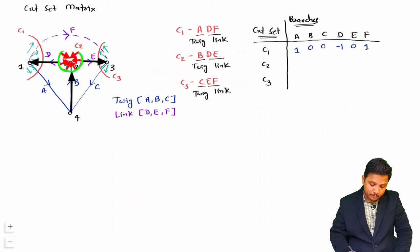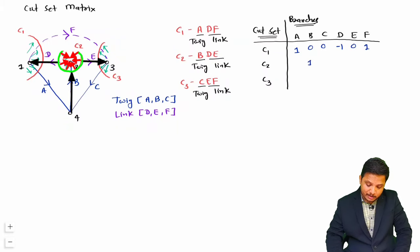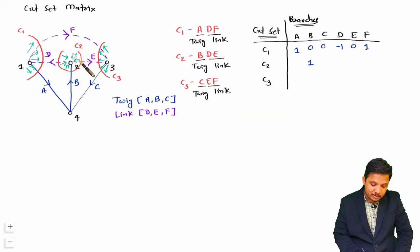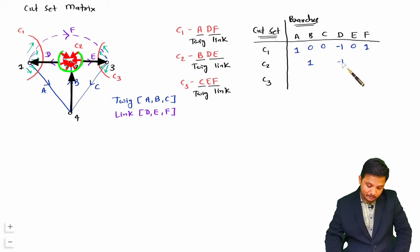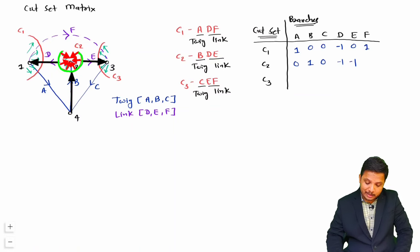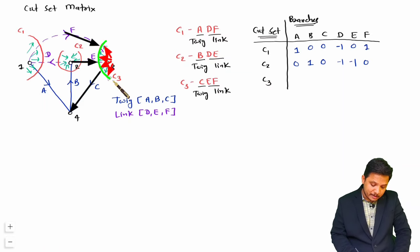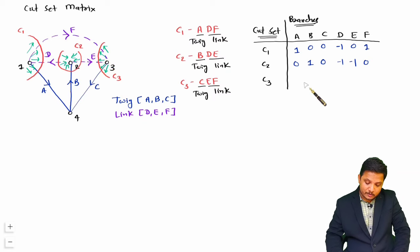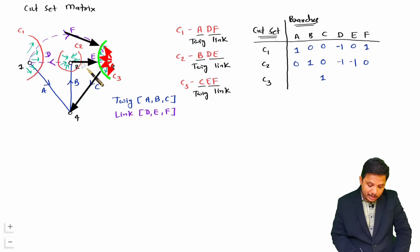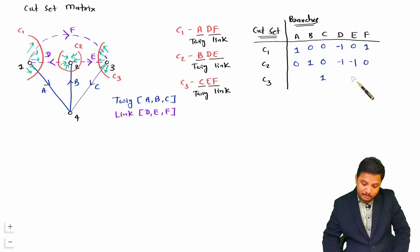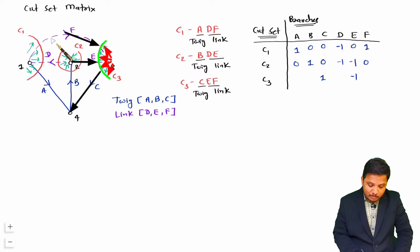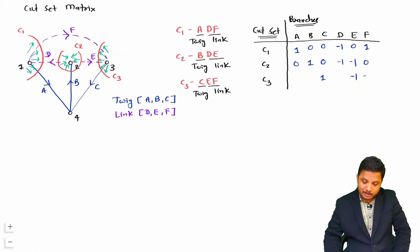For cut set C2: B is in the direction of the cut set so B gets plus 1; D is in the opposite direction so D gets minus 1; E is also opposite to the direction of C2 so E gets minus 1; others are 0. For cut set C3: C is in the direction so C gets plus 1; E is in the opposite direction so E gets minus 1; F is also opposite so F gets minus 1; and A, B, D are not connected so those are 0.